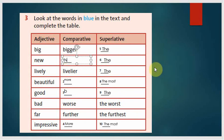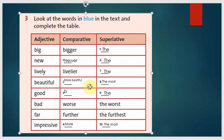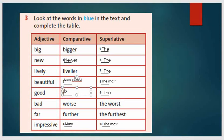Okay, the first word is big, bigger. We'll come to superlative later. New, newer. Lively, livelier. The next word is beautiful, comparative more beautiful. Next, good in comparative, better. Next, bad, worse. Far, further. Impressive, more impressive.